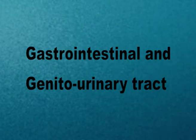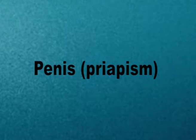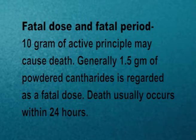When administered orally, it causes severe inflammation of the gastrointestinal and genitourinary tract, and burning sensation in the throat and stomach. Other signs and symptoms include nausea, abdominal pain, vomiting of blood-stained material, and diarrhoea with blood and mucus. In males, persistent and painful erection may occur with frequent seminal emission. In females, enlargement of the vulva and abortion may occur. In fatal cases, coma with convulsions usually precedes death. Fatal dose: 10 grams of active principle may cause death; 1.5 grams of powdered Cantharis is regarded as fatal. Death usually occurs within 24 hours.